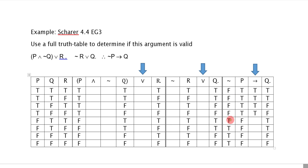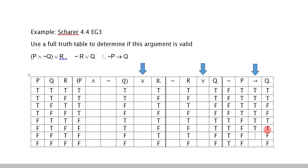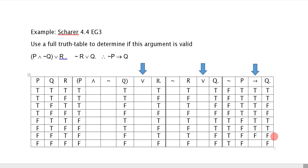When the antecedent is true, I have to be careful. True-true is true. True-true is also true. But true-false means the conditional is false. True-false means the conditional is false. There, I've evaluated the conclusion properly.